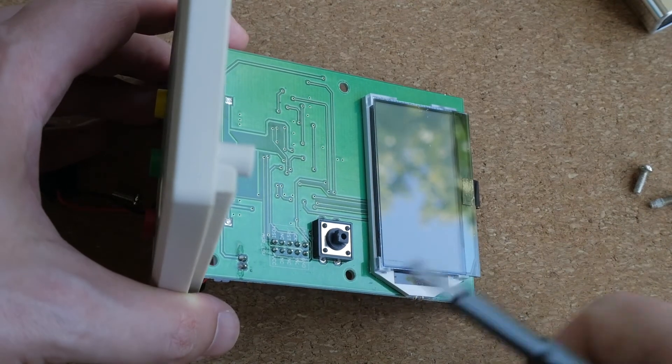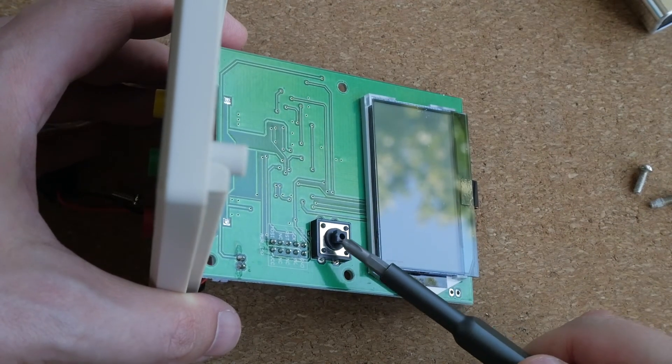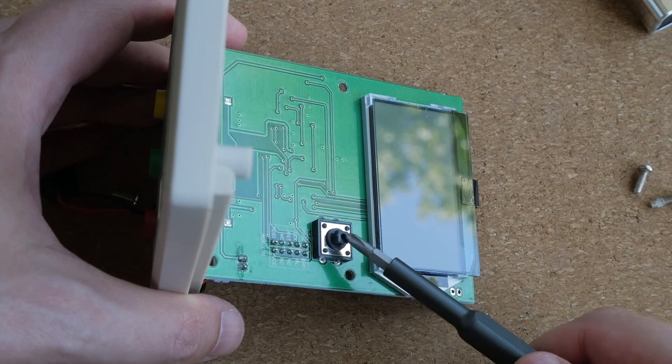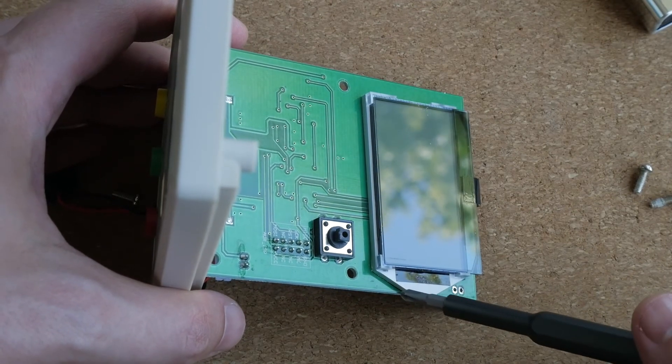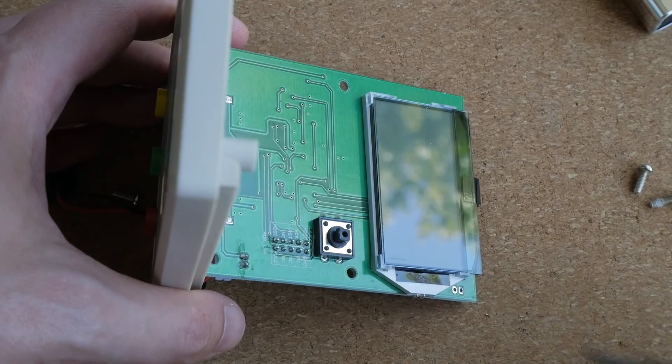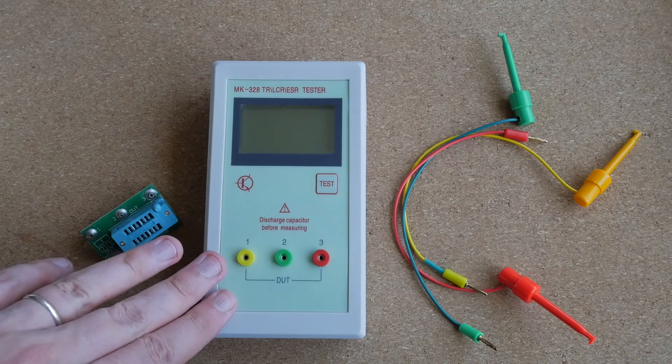The test button is a proper push button and not some membrane bullshit. Unfortunately I will not be able to straighten the screen because it is soldered to the PCB. The device is back together.